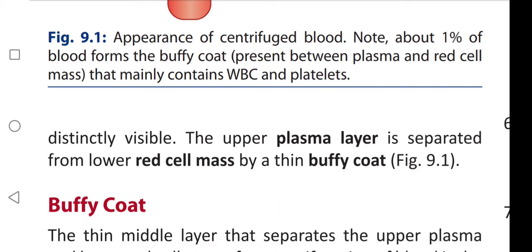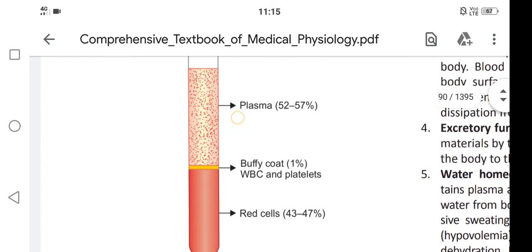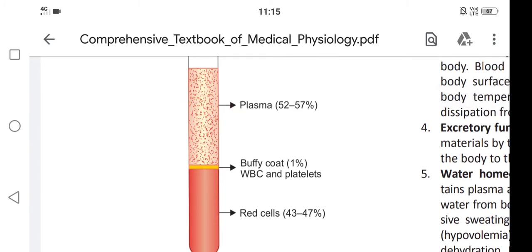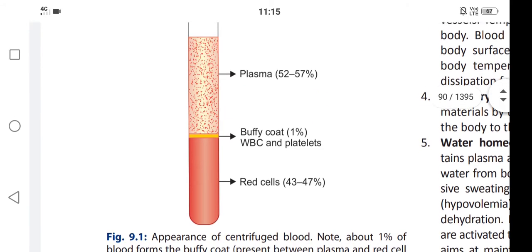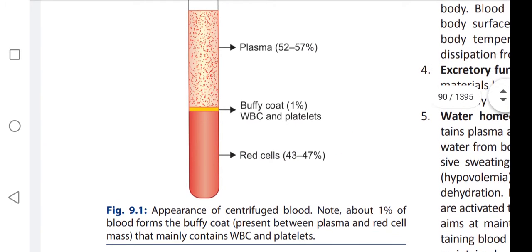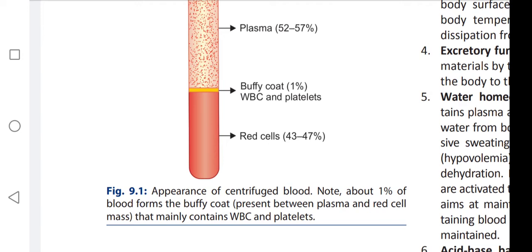The upper plasma layer is separated from the lower red cell mass by a thin buffy coat. As you can see here, there are three layers: the first layer is the plasma layer, which constitutes 52 to 57 percent; the second layer is the buffy coat, which is very thin at about one percent, formed by white blood cells and platelets; and the third layer is the red cell mass, which constitutes about 43 to 47 percent.